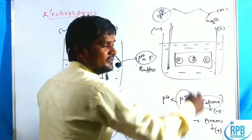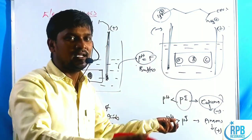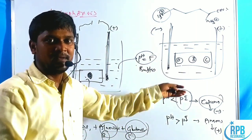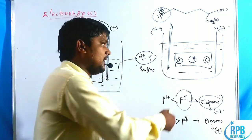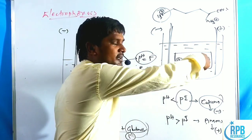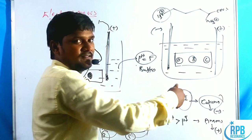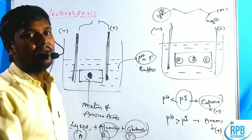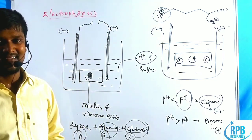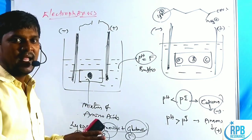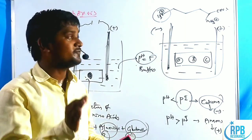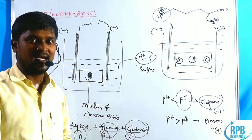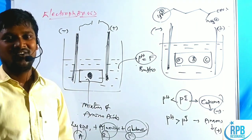After the electrophoresis is complete, the cellulose acetate strip is removed and cut into several pieces to identify each amino acid using appropriate tests. This is the method to separate amino acids using electrophoresis. That's all for this video — I've explained zwitterions, isoelectric point, and the electrophoresis method. I'll explain more reactions in our next videos. Thank you for watching.